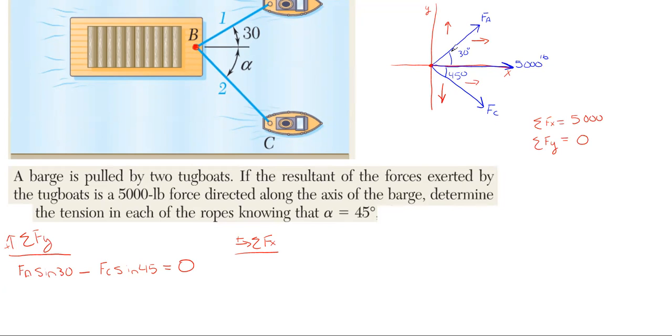Same thing for F_C, the component will be to the right. F_A is up and to the right, F_C is down and to the right, which makes sense because they're both going to combine to be 5,000, which is to the right.